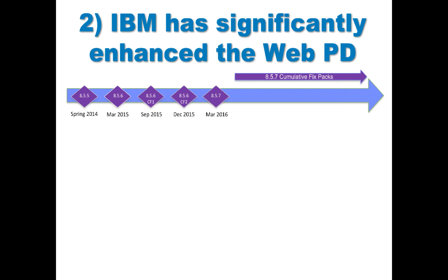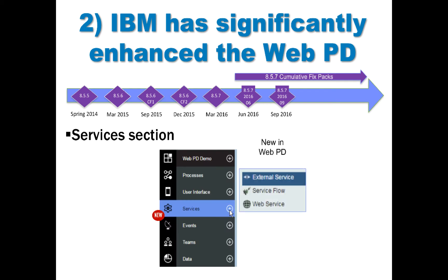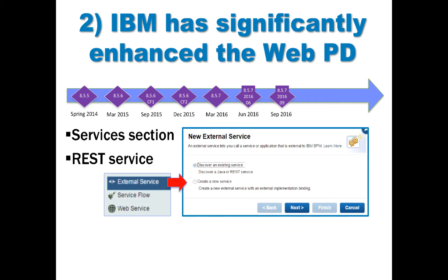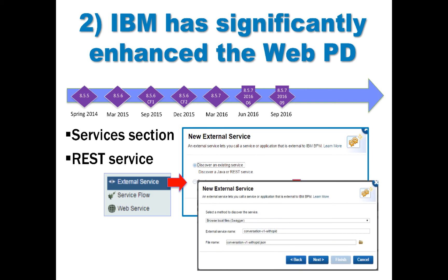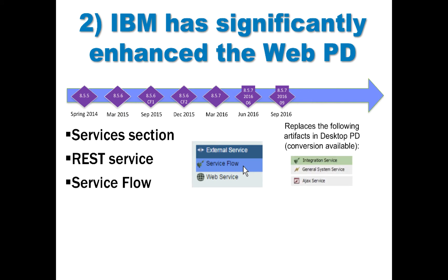Since 8.5.7, IBM has been releasing cumulative fix packs every quarter. In the September 2016 release, there's a new services section in the web PD which allows you to build integrations. There's also a brand new REST service, which allows you to discover an existing service based on Swagger documentation. The service flow was also introduced — it replaces several artifacts in the desktop PD: the integration service, the GSS, and the Ajax service. It comes with a simplified palette for modeling.